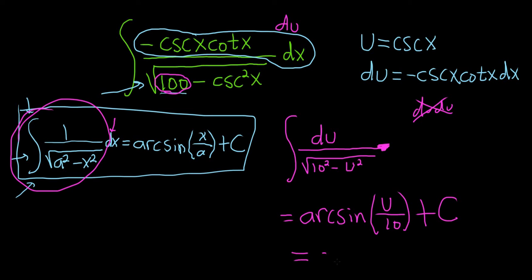Well, u is cosecant x. So we can replace u with cosecant. This is cosecant of x over 10, and then plus our constant of integration, capital C.